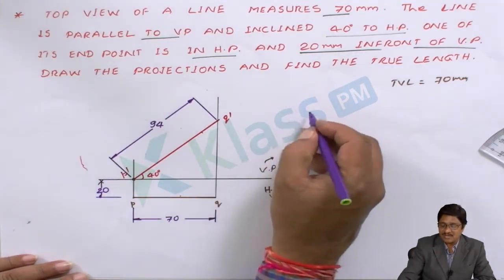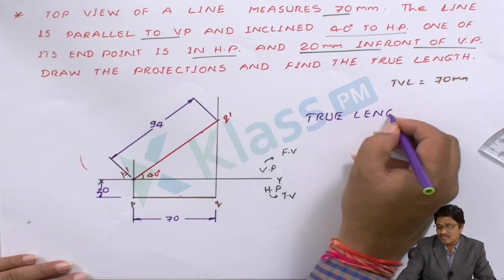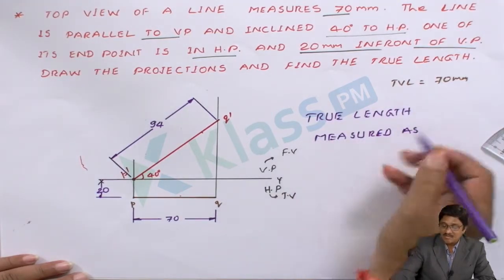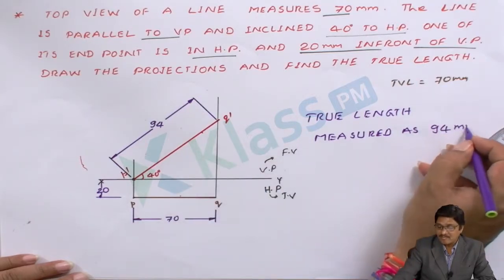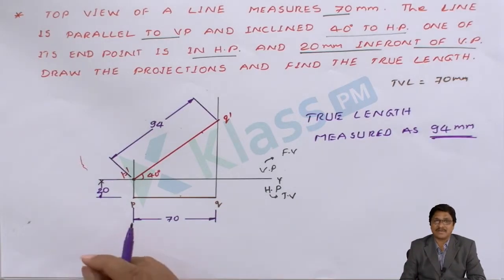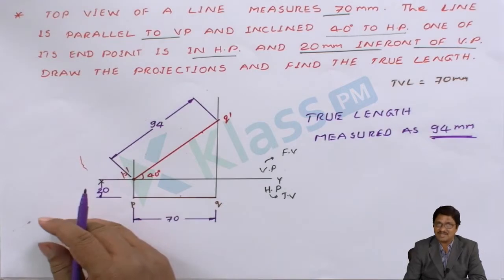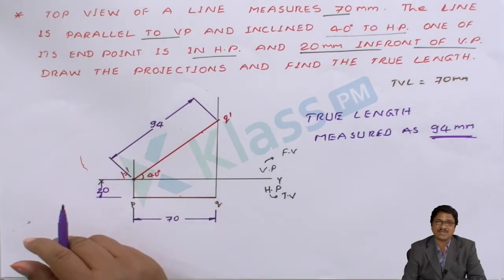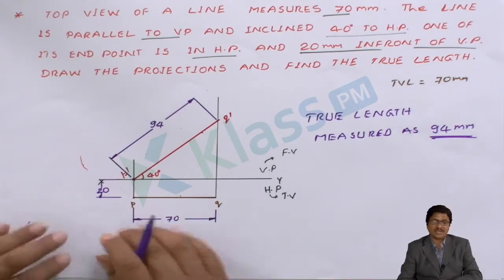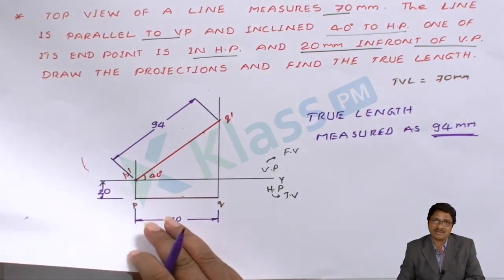If you can represent the true length measured as 94 mm, that is the required answer. Once you are strong in the fundamental concepts, whether the problem is given in a direct way or an indirect or reverse way, you can find the solution very conveniently. You need to know all the fundamental concepts — then only you can attempt whatever problem may be given and draw the solution comfortably.